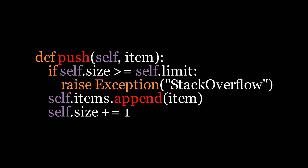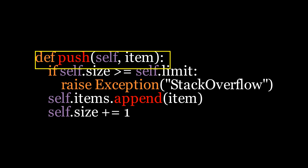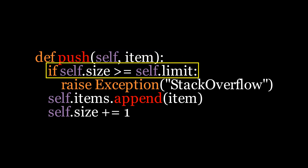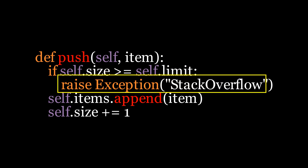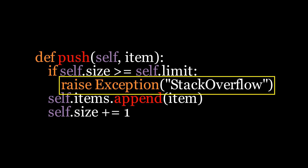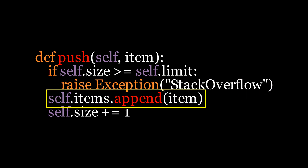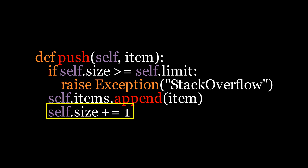To define the push operation, we'll create a method called push that takes the element to be added as an input parameter. First, it checks if the stack is full by comparing the current size with the limit. If the stack is full, it will raise a stack overflow error. Otherwise, it will append the new item to the items array and increase the size by 1.